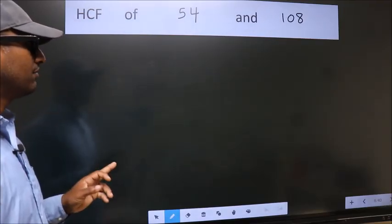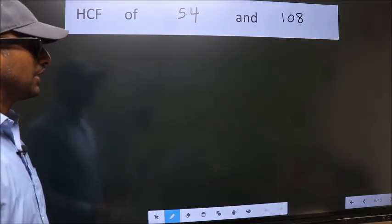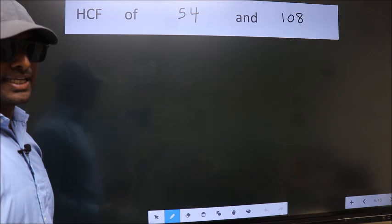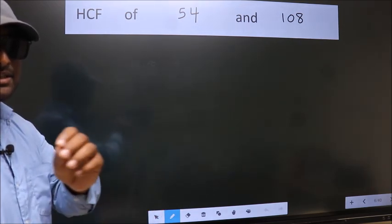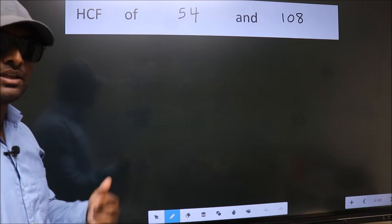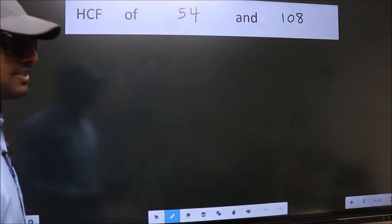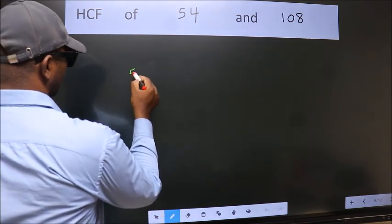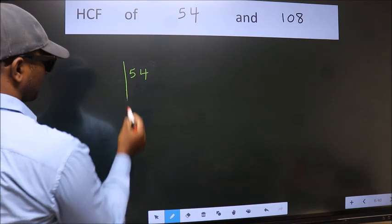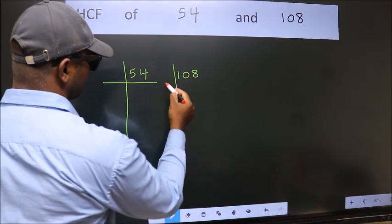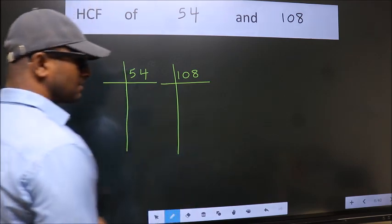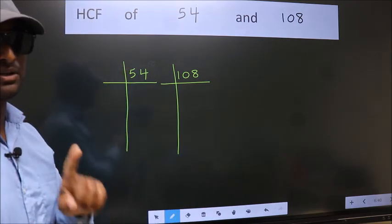HCF of 54 and 108. To find the HCF, we should do the prime factorization of each number separately. What I mean is, 54 here, 108 here. This is your step 1.